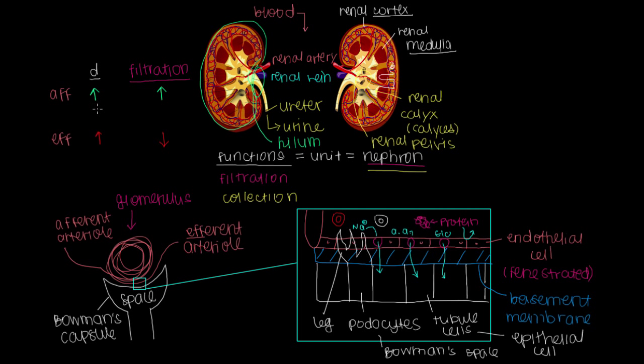Now the same thing goes if we decrease the diameter of our afferent arteriole. If we decrease the amount of runners or blood that can come into the glomerulus, that means there's going to be less fluid filtered out, so a lower filtration rate.